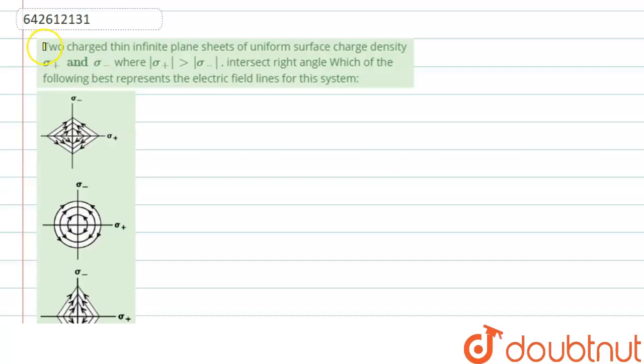Hello everyone. Let's start the question. Question says that two charged thin infinite plane sheets of uniform surface charge density sigma plus and sigma minus, where mod sigma plus is greater than mod sigma minus, intersect each other at right angle. Which of the following represents the electric field lines of the system? So in this question we have to find out which represents the electric field lines.